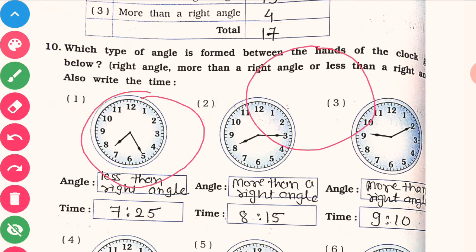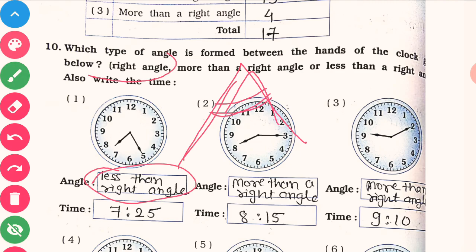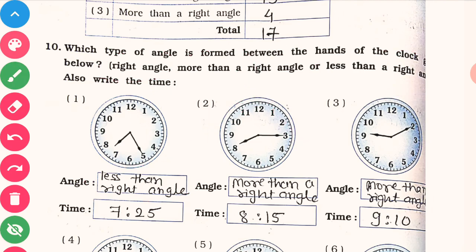One hand is your hour hand and the other is your minute hand. We have to find out the angle between their hands. First, we have to check what is the angle between their hands, and then we have to write in the box either it is a right angle, more than a right angle, or less than a right angle. We also have to write the timing shown by the clock. So let us start our topic without wasting any time.